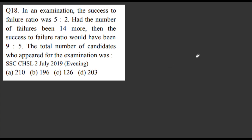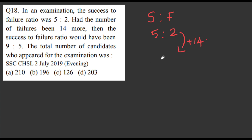So this is our first problem. In an examination, the success to failure ratio is given as 5 is to 2. The number of failures has been less than 14, and the ratio has changed to 9 is to 5. Now we're going to find the total number of candidates who appeared for the exam.